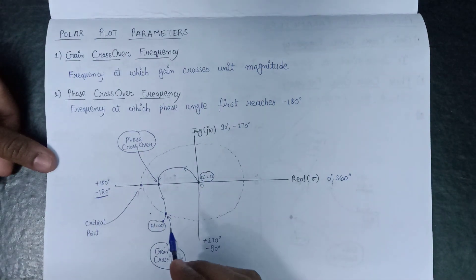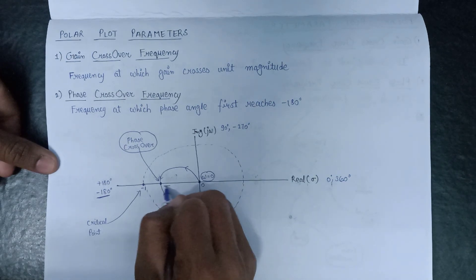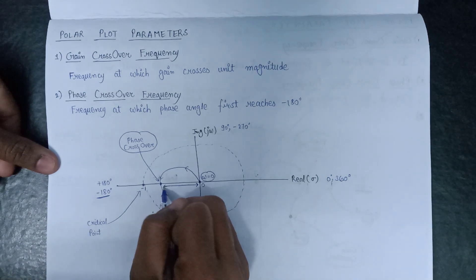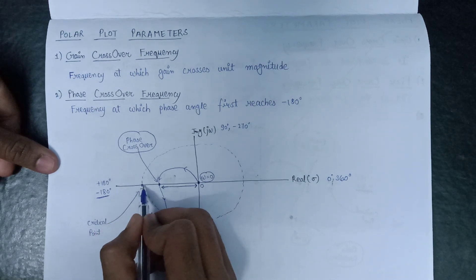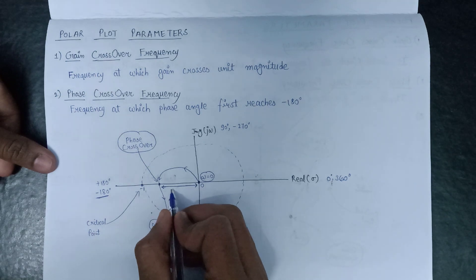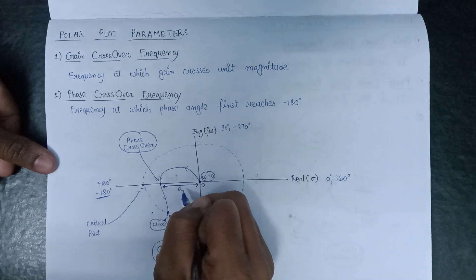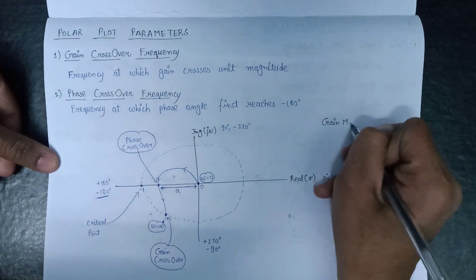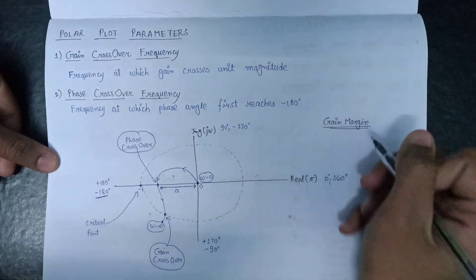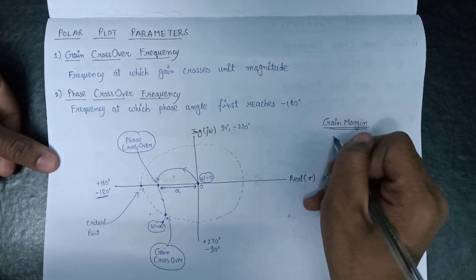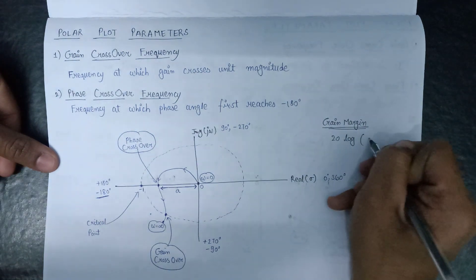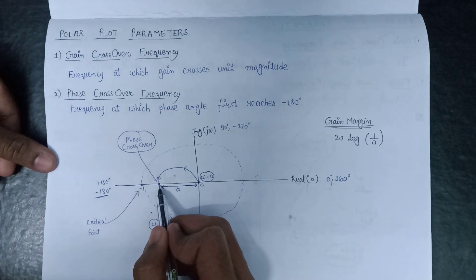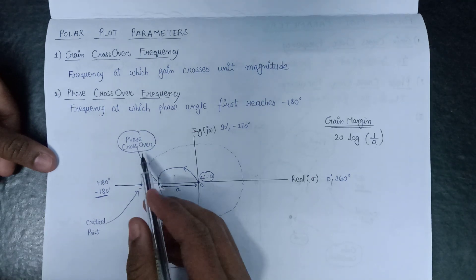Let's suppose A is the distance between the origin and the point at which our polar plot intersects minus 180 degrees on the real axis. There is another important term, that is gain margin. Gain margin can be evaluated by the formula 20 log of 1 over A, where A is the distance between the origin and the point on the real axis at which the phase crossover frequency lies.